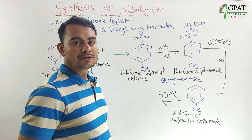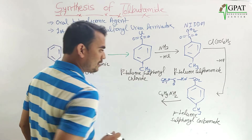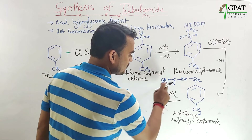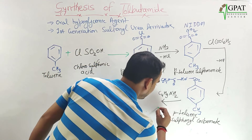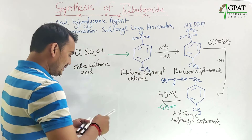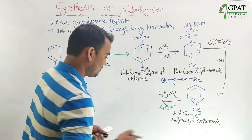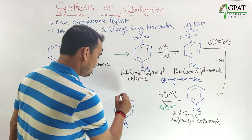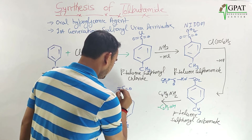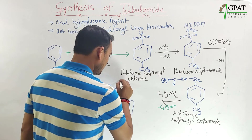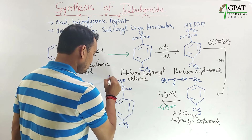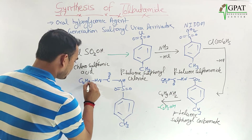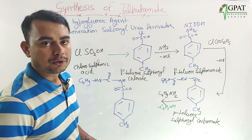Finally, paratoluene sulfonamide carbamide is reacted with butylamine. One hydrogen of the amino group and the C2H5O group are removed as ethyl alcohol. Butylamine joins the compound, and the final product obtained is tolbutamide, with the structure featuring a CH3 group, SO2, NH, CO, and an NH-butyl chain.